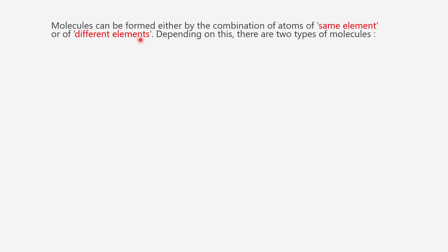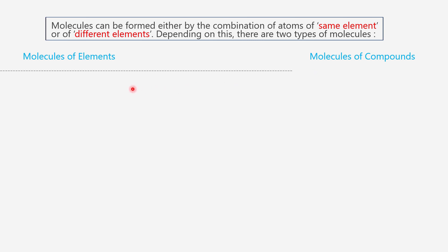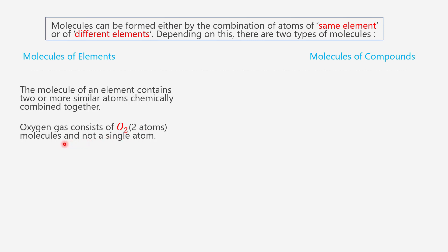Molecules can be formed either by the combination of atoms of the same element or of different elements. Depending on this, there are two types of molecules: molecules of elements and molecules of compounds. The molecule of an element contains two or more similar atoms chemically combined together. For example, oxygen gas consists of O2, meaning two atoms of oxygen — one molecule of oxygen, not a single atom.